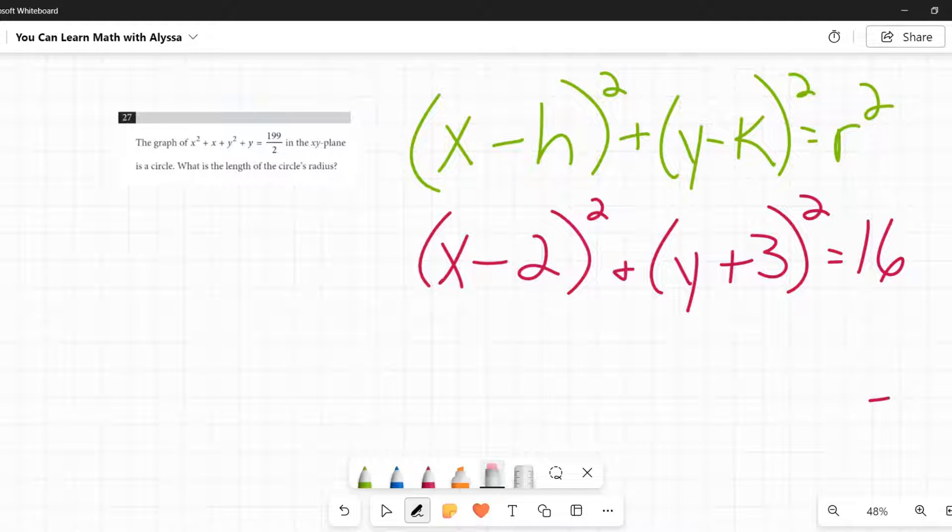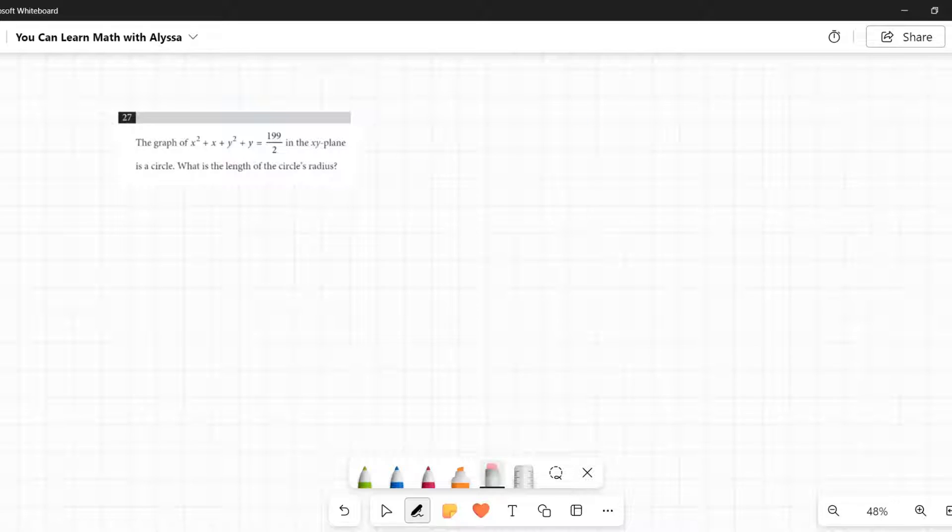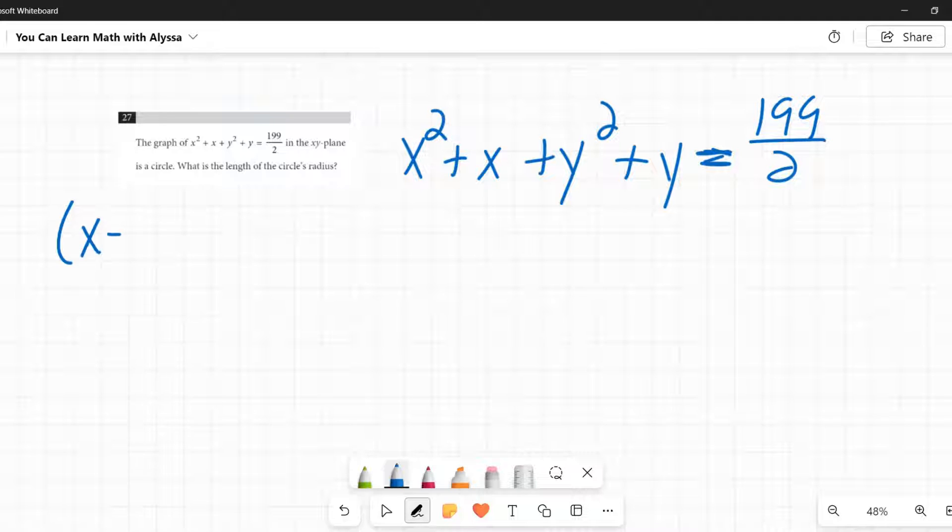All circles are going to be in this format. So when you are given something that looks like what they just gave us, x squared plus x plus y squared plus y equals 199 halves, and they want it to be the formula of a circle, they need you to get it into that x minus h squared plus y minus k squared equals r squared format. So you need to turn each of these into perfect squares. This is completing the square. This is probably something you did back in Algebra 1. You probably did it for a week or two and didn't like it that much. And you thought, I passed the test, I never have to think about this again.